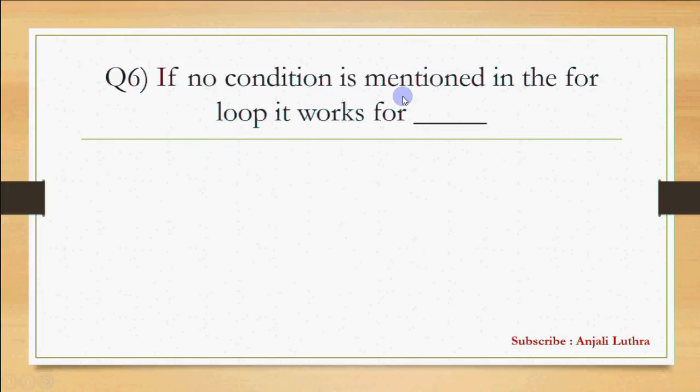Question 6: If no condition is mentioned in the for loop, it works for? The correct answer is it works for infinite times. If you write for A equals 1, semicolon, condition should be here but condition is missing. So if condition is not mentioned in the for loop, that means loop will work for infinite times because when condition is not there, by default it is treated as true and it will keep on working. Obviously we can use break statement, exit, go to, but because of missing condition it will work for infinite number of times.